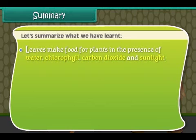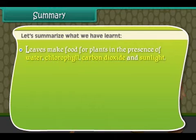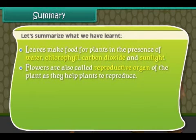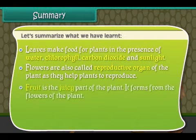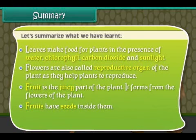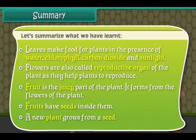Leaves make food for plants in the presence of water, chlorophyll, carbon dioxide and sunlight. Flowers are also called the reproductive organ of the plant as they help plants to reproduce. Fruit is the juicy part of the plant and it forms from the flowers. Fruits have seeds inside them, and a new plant grows from a seed.